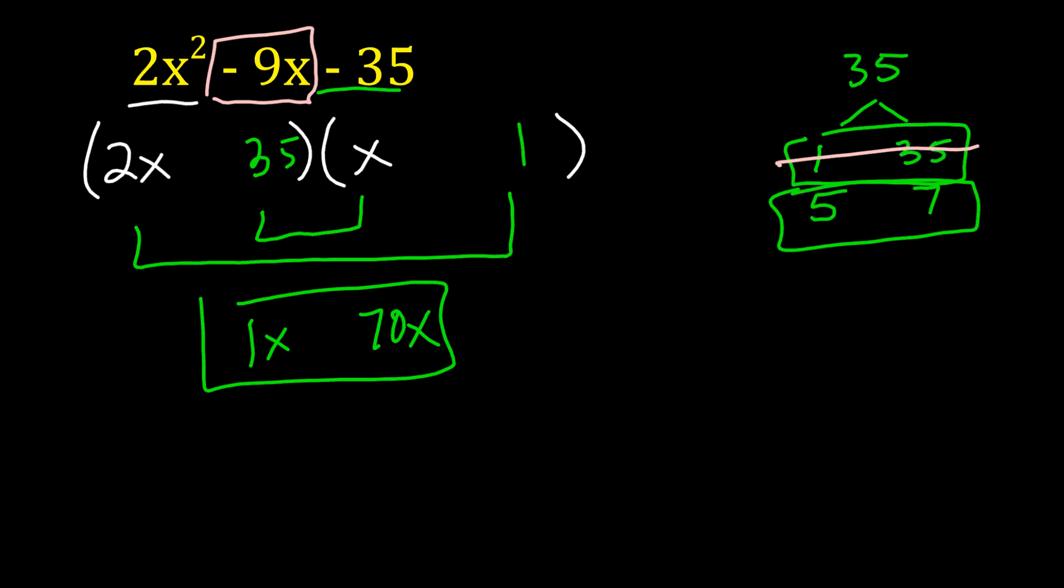There's no way that I can either add or subtract these two to get negative 9x. And if I flip-flop the 1 and the 35 around, that's not going to help us either. If I put 35 here and 1 here, then instead of 1x and 70x, we get 2x and 35x. Still, it's still not going to be anywhere close to 9. So that's why I know I can eliminate that 1 and 35 right away.